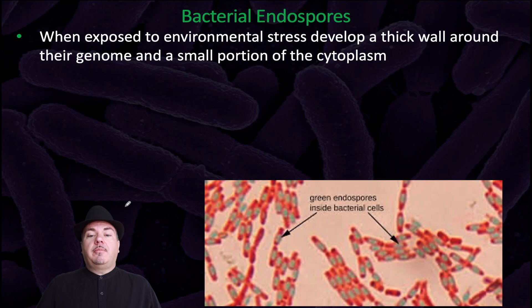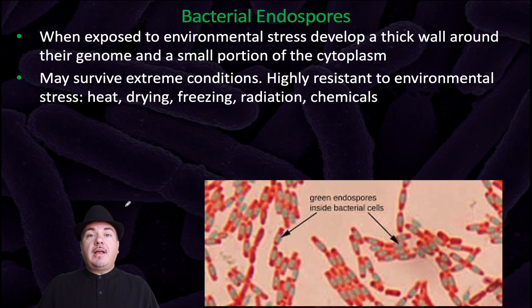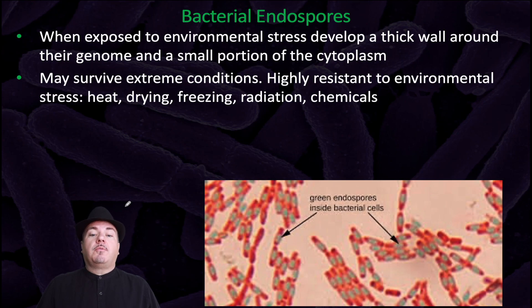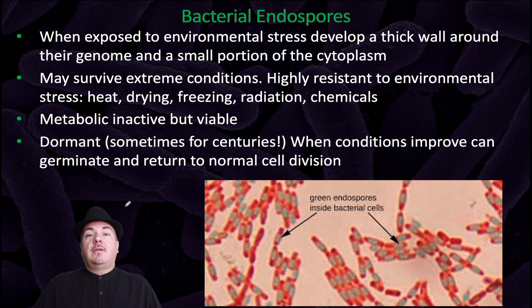When exposed to environmental stress, the bacteria can develop a thick wall around their genome and a small portion of the cytoplasm. This is called an endospore. This allows them to survive extreme conditions, making them highly resistant to environmental stress such as heat, drying, freezing, radiation, and chemicals. The endospore is metabolically inactive, but it's viable.